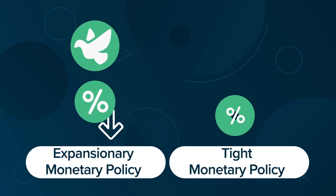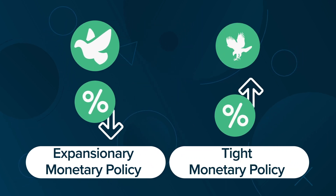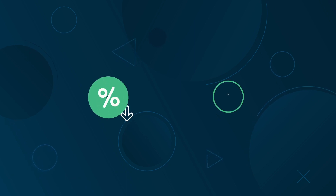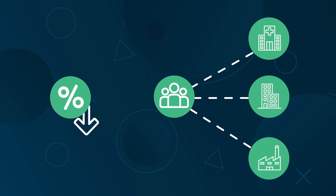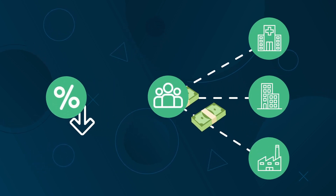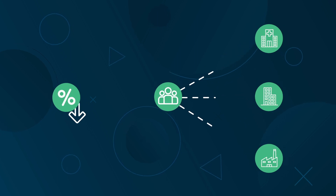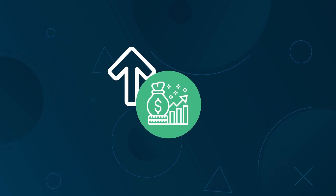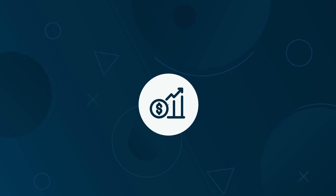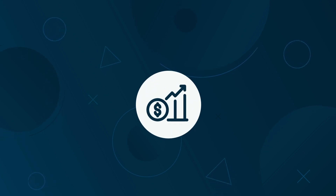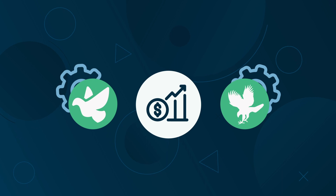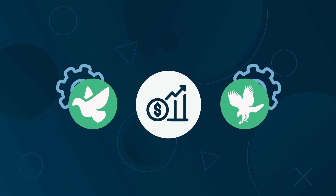Lowering the federal interest rate makes it cheaper to borrow money, which may incentivize people to invest more. While this may stimulate the economy, it can also have adverse consequences, such as higher inflation rates. While both views attempt to pursue higher economic growth while controlling inflation rates, hawks and doves disagree on the best way to accomplish these goals.